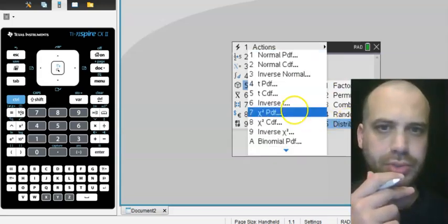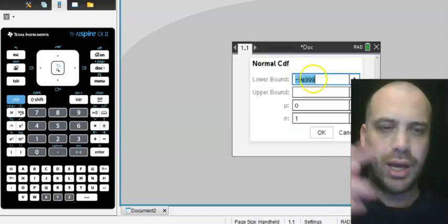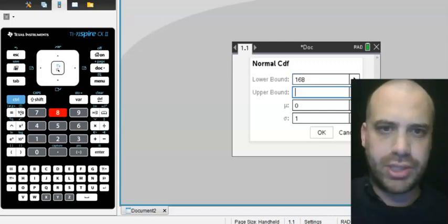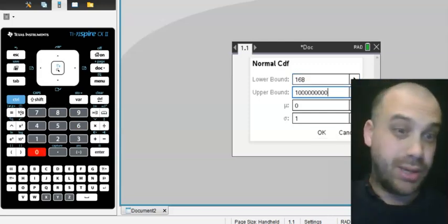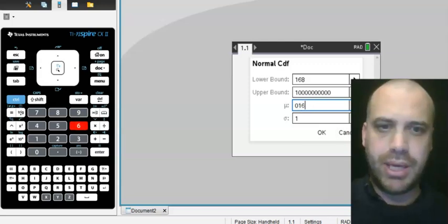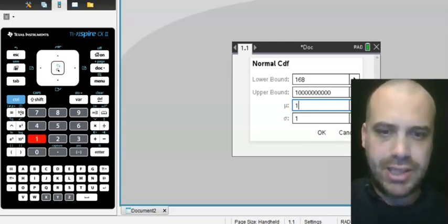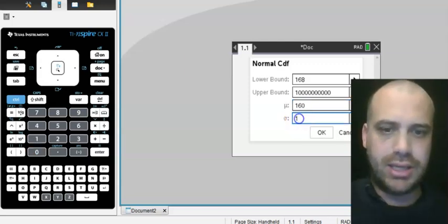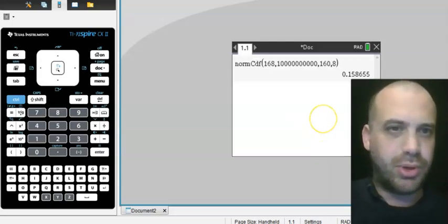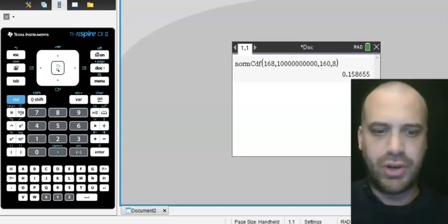Probability, distributions, we're doing the normal CDF. A lower bound of 168, an upper bound of like a million, because we're going as far as we can there. A mean of 160 was what the question had, and a standard deviation of eight. And we have an answer of 0.158655.